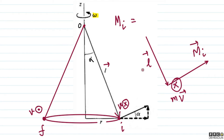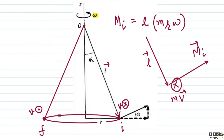Since the angle at the top is alpha, by alternate interior angles the angle between the angular momentum vector and the vertical is also alpha. The remaining angle is 90 minus alpha, making the angle with the horizontal equal to alpha. So the angular momentum vector MI can be resolved into two components: one along the z-axis (upward) and one radially outward.